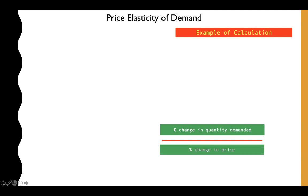Let's work through a calculation. The formula is the change in quantity demanded over the change in price. In this example, Price 1 is the original price and Price 2 is the new price. At Price 1 of five dollars, quantity demanded is 270 units. When price drops to four dollars, quantity demanded rises to 300 units. We can see a price drop leads to an increase in quantity — but how elastic is this?